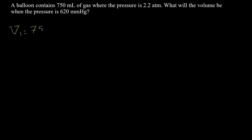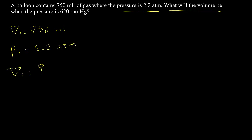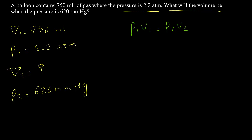Example 3: A container holds 750 milliliters of gas at a pressure of 2.2 atm. What will the volume be when the pressure is 620 mmHg? We want to find v2 when p2 = 620 mmHg. Applying p1·v1 = p2·v2, there is a problem: the units for p1 and p2 are different — atm versus mmHg — so we need to convert one to the other.